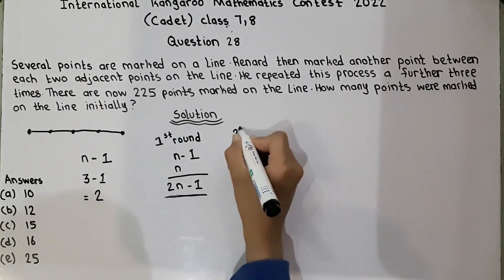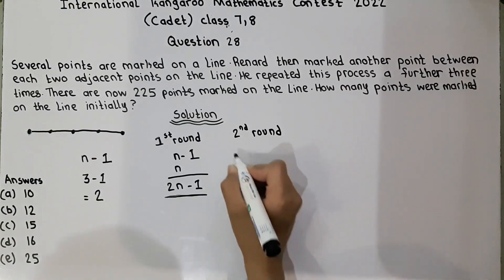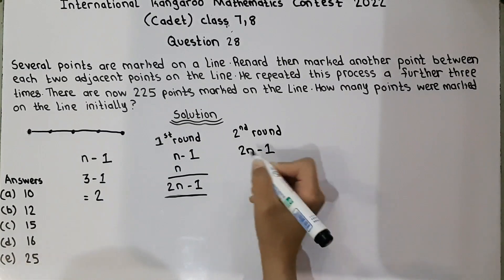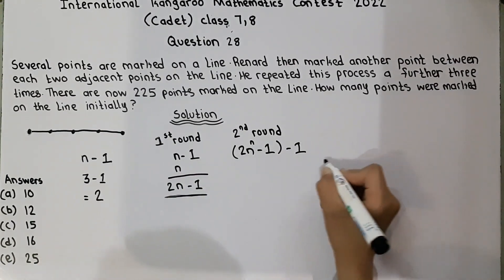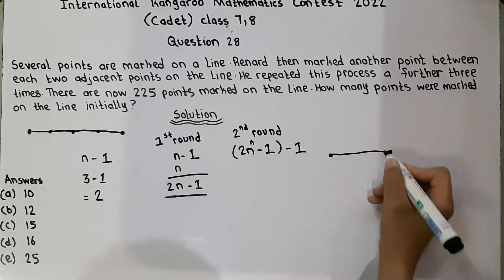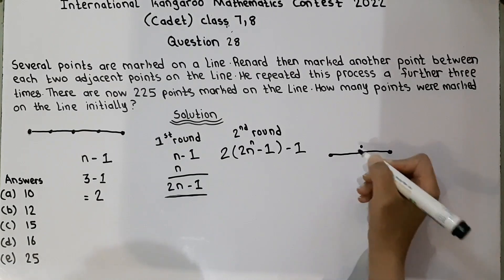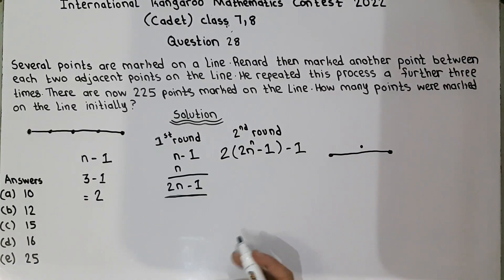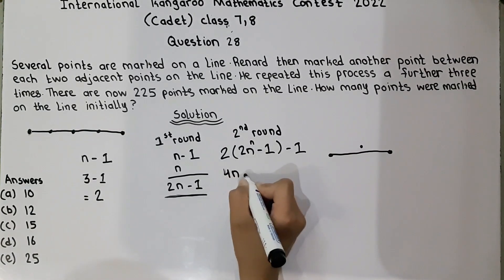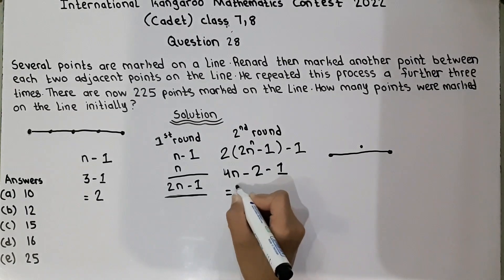In the second round, he will use two n minus one as his new n. Applying the formula n minus one again and multiplying by two: two times (two n minus one) minus one gives four n minus two minus one, which equals four n minus three.